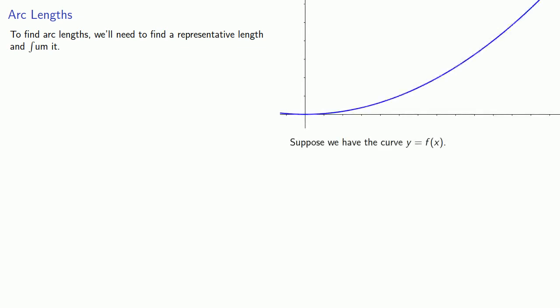Suppose we have the curve y equals f(x). A representative length is that between the point (x, y) and another point x plus a small bit of the x axis, y plus a small bit of the y axis—x plus dx, y plus dy.